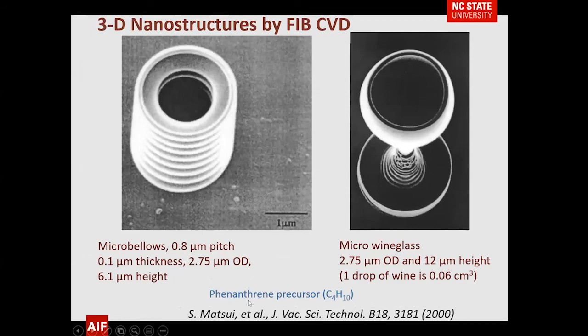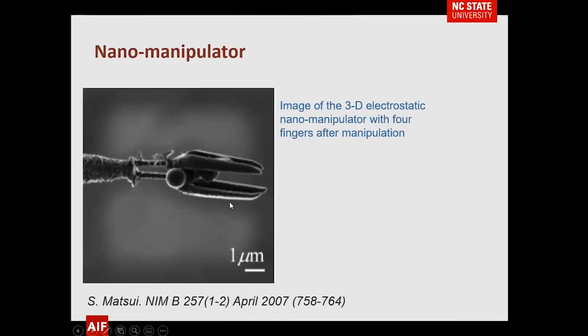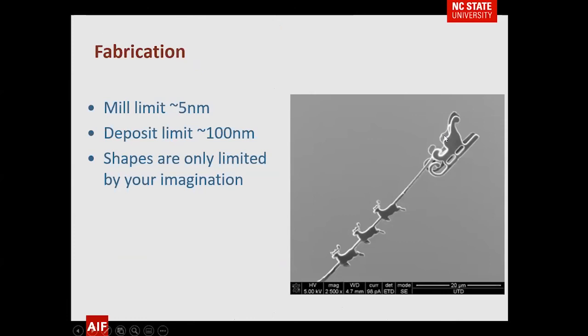Matsui — you can Google his name and find many papers — has been excellent at designing all kinds of FIB-fabricated features. I like this micro wine glass that won't hold even one drop of wine, but it shows you're limited only by your imagination. In 2007 he made a 3D nanomanipulator with fingers to manipulate at the nanoscale. You can see his sleigh and reindeer in another example.